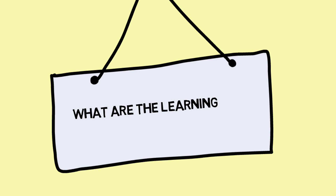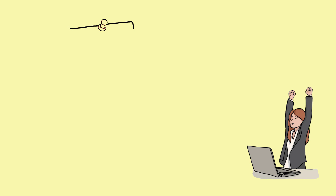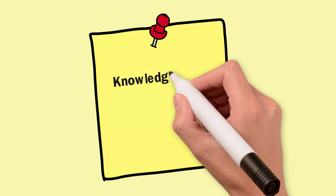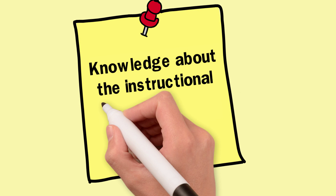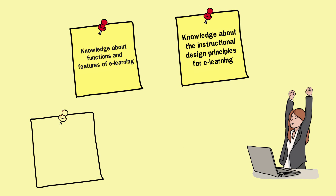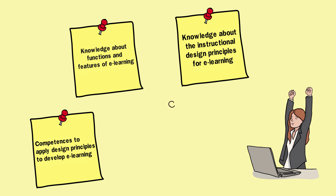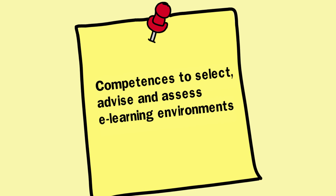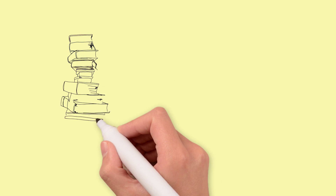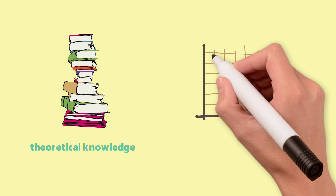What are the learning goals of this course? After following this MOOC course, you are expected to have developed the following competencies: knowledge about functions and features of e-learning; knowledge about the instructional design principles for e-learning; competencies to apply design principles to develop e-learning; and competencies to select, advise, and assess e-learning environments. The course will not only enhance your theoretical knowledge about e-learning design, but also help you to enhance your professional skills in developing e-learning.